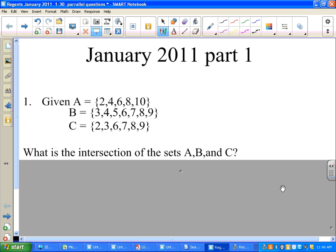The first thing I want you to notice is that this is labeled number one, so that's parallel to question number one in the Green Book for January 2011. Given the sets A, B, and C are the following numbers, what is the intersection of sets A, B, and C? Questions one through seven are basically vocabulary questions or some simple procedural questions. This is a vocabulary question.